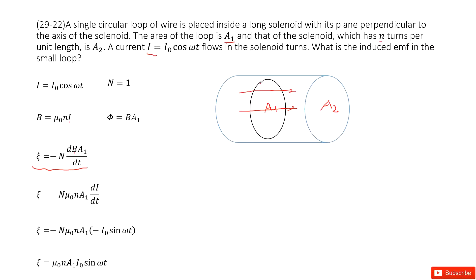So we can write the magnetic flux in this small loop as B times A₁. Now you can see we input the B inside. The equation becomes this one, because only current changes with time. And then we can see the equation for current is given. So we do the derivation current with time t.